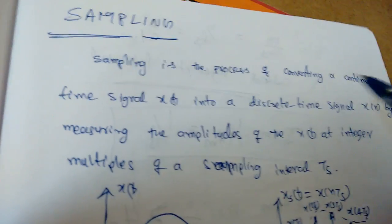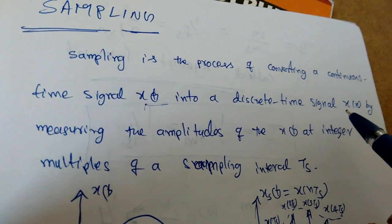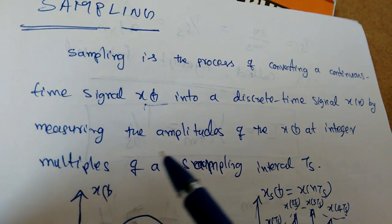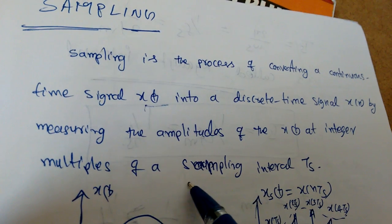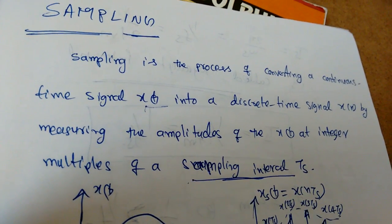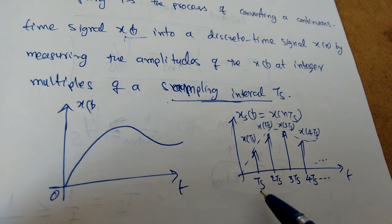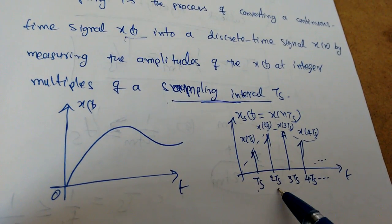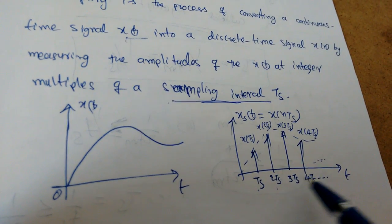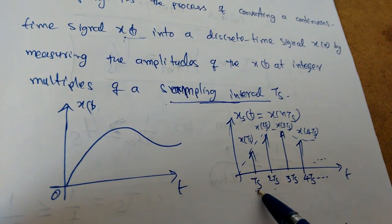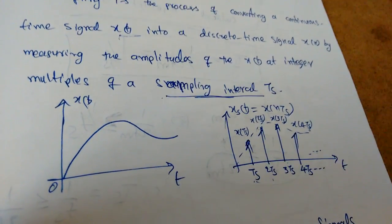Sampling is the process of converting a continuous time signal x(t) into a discrete time signal x(n) by measuring the amplitude of x(t) at integer multiples of a sampling interval Ts. So this is a continuous time signal — at Ts I am taking one sample, at 2Ts I am taking the second sample, then 3Ts and 4Ts. At each time interval Ts I am taking one sample, one amplitude. So it is converting into discrete time.